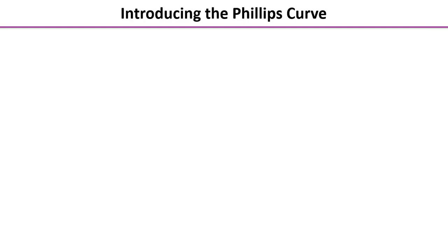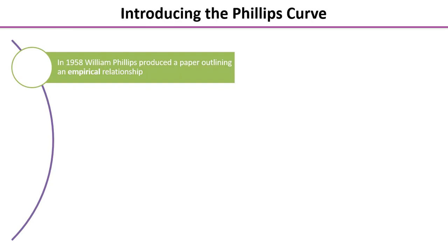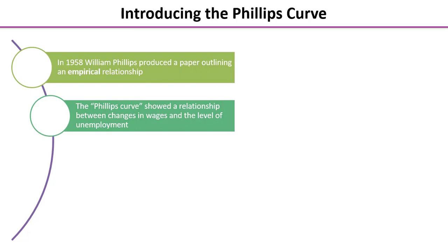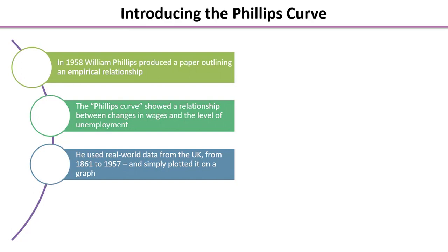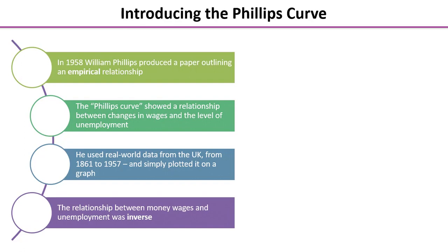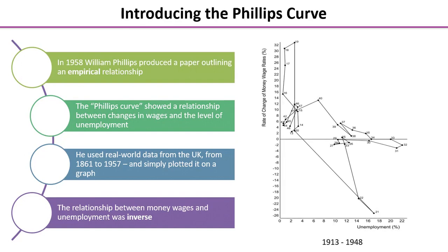Let's draw this into thinking about the Phillips Curve. Back in 1958, the New Zealand economist William Phillips produced a paper outlining an empirical relationship he had observed. The diagram he drew showed a relationship between changes in wages and the level of unemployment in the economy. He used real-world data from the UK from 1861 to 1957, plotted the wage inflation rate and unemployment rate on a scatter diagram, and noted that the relationship between money wages and unemployment was inverse. On screen you can see what he plotted for the period 1913 to 1948.